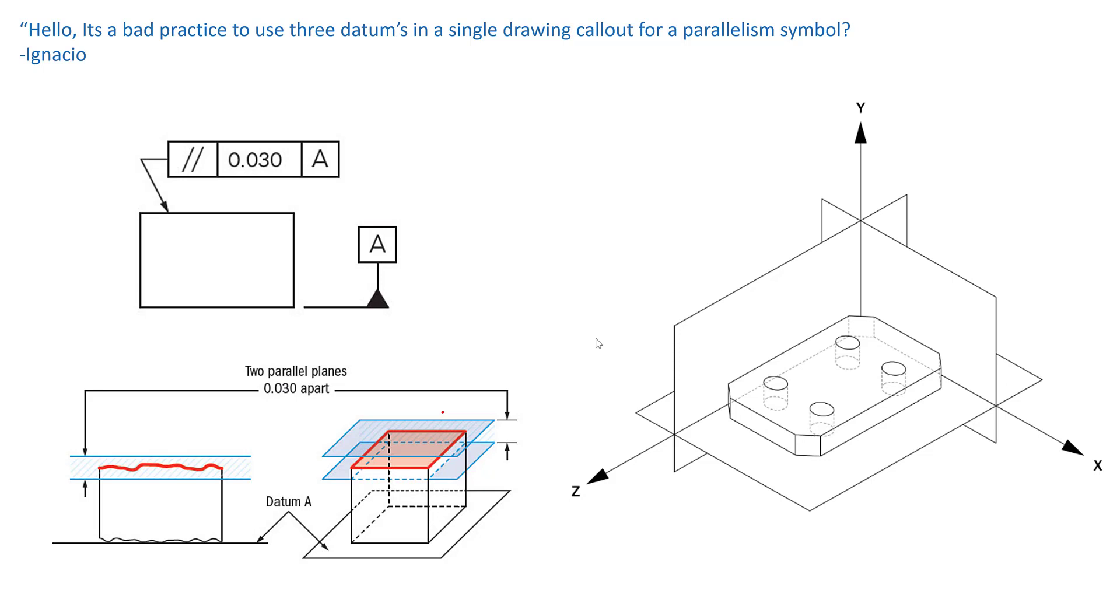So we have these two parallel planes. That's our tolerance zone in reference to A. So if we added B to this feature control frame, it would confuse either the person manufacturing this component or inspection. Because if A is this surface here, and we'll just imagine that this part that's sitting in this datum reference frame here is that block or the part in question.